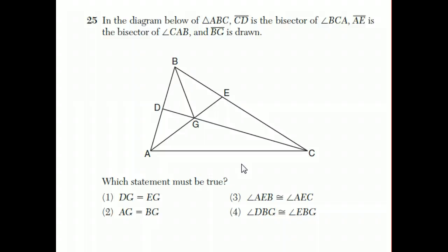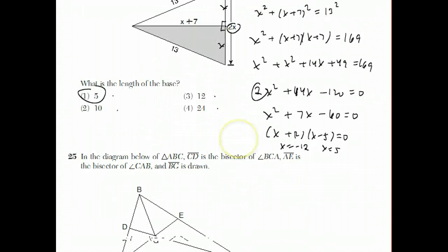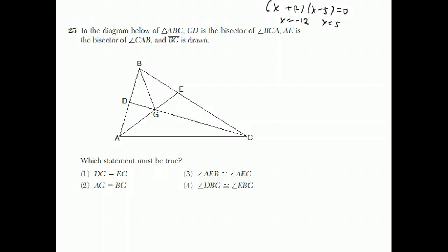Question 25. In the diagram below of triangle ABC, CD is the bisector of angle BCA. AE is the bisector of CAB. What an angle bisector means is that AE is the bisector of CAB. That means that this angle is equal to that angle. And CD is a bisector of BCA. That means this angle equals that angle.